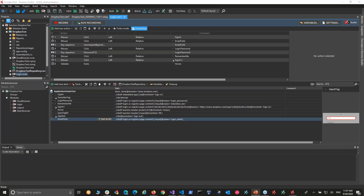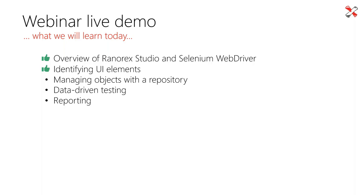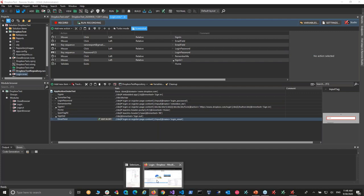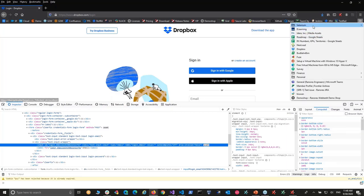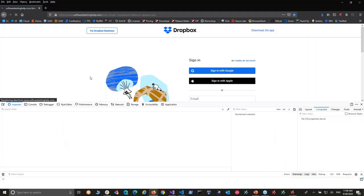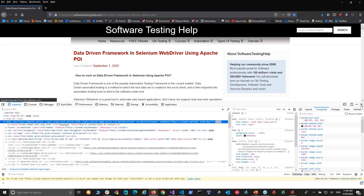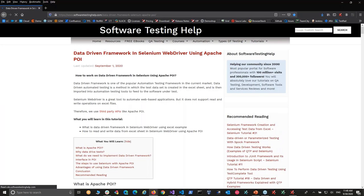We talked about managing objects with a repository and why that's such a big benefit in Ranorex — you get it out of the box. Now, in Selenium, another part of the framework you have to build yourself — besides the page object model — is if you want to do any data-driven testing, you have to create those harnesses yourself. I won't have time to show it in Selenium because it's quite a bit of coding, but in Ranorex it's going to be three steps. In Selenium, it's going to be at least six.